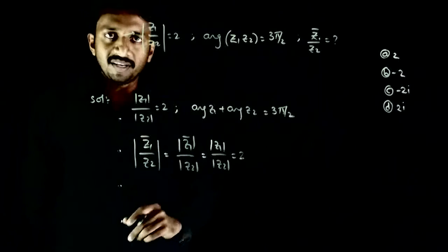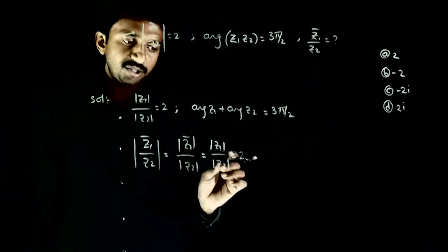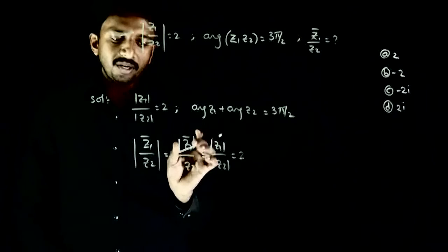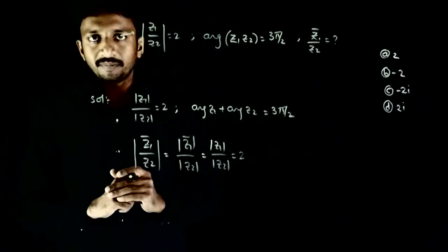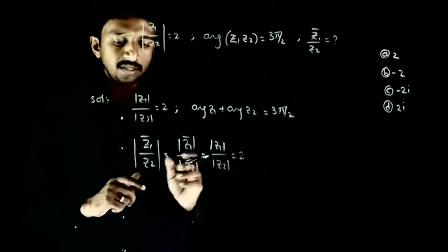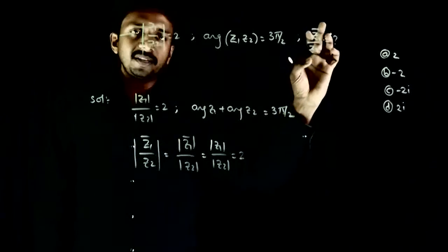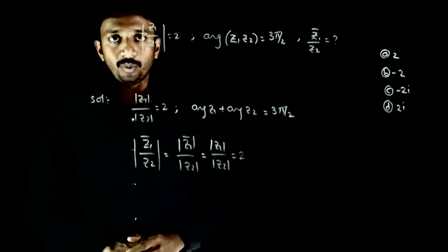Given mod z1 by mod z2 is 2, and mod z1 bar equals mod z1, so the modulus of z1 bar by z2 is 2.